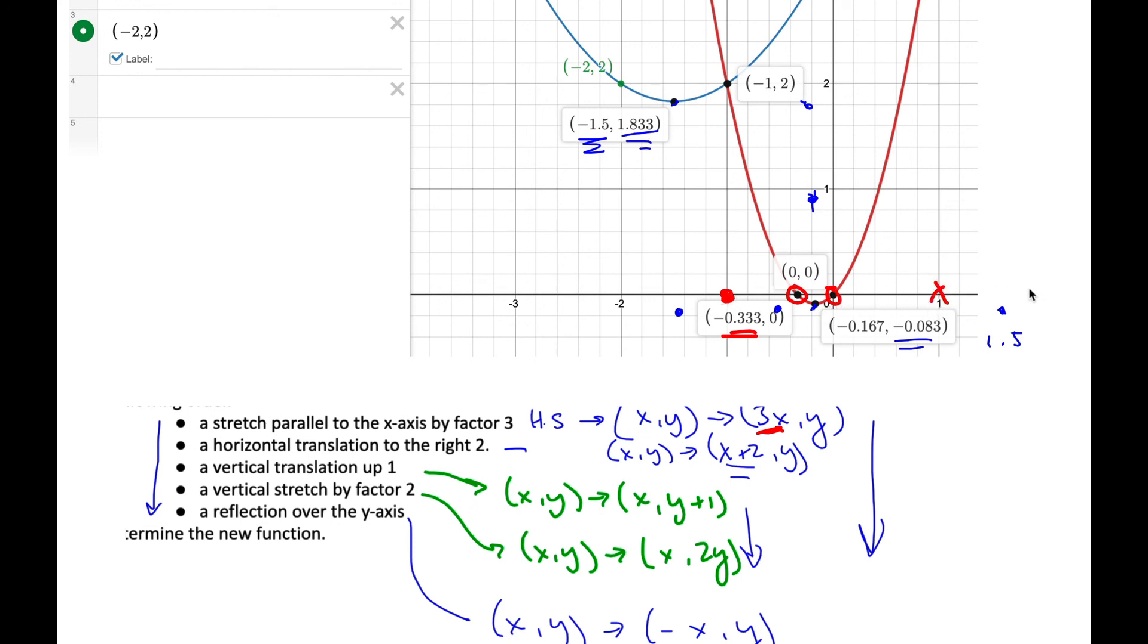0 will go over 2 to here. Notice the vertex is still in the middle. And then I reflect them. So this 2 becomes negative 2. This 1 becomes a negative 1. And if you look up here, those are the x-values, which are the corresponding x-intercepts from the original function.